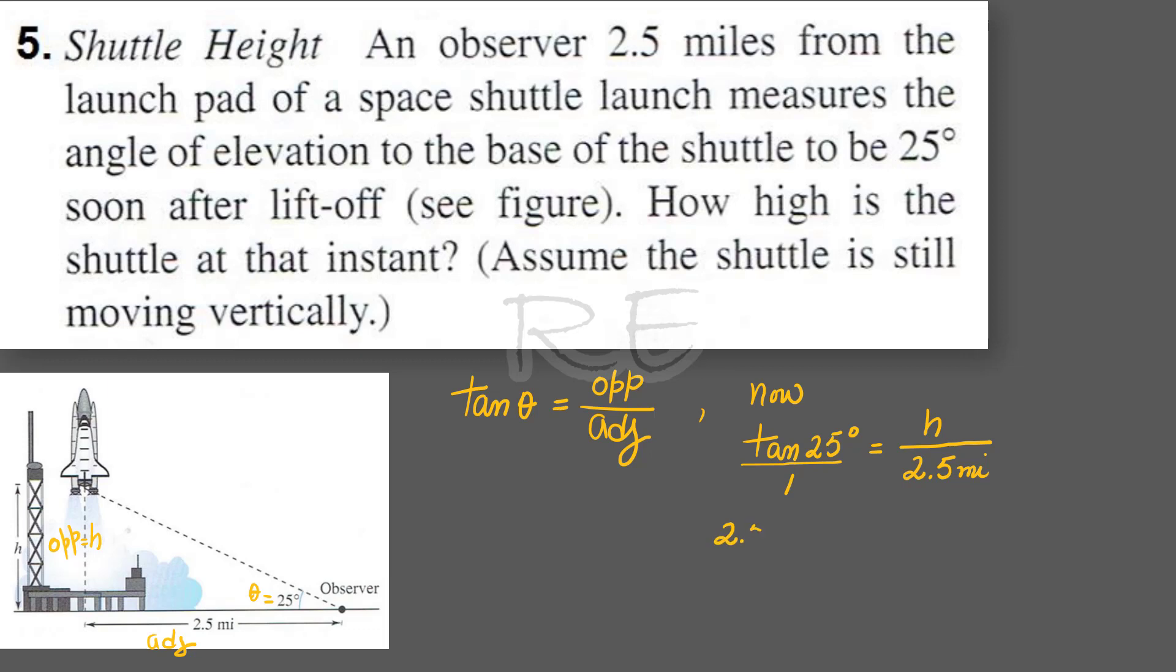When we cross multiply, 2.5 miles times tangent 25 degrees is equal to the height of the shuttle.